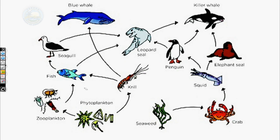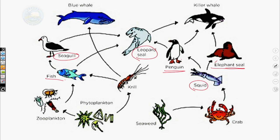Can you identify two different competitors in this food web? The penguin and the elephant seal both compete for squid — that is the food source of both. Another example: the leopard seal and the seagull both compete for fish.